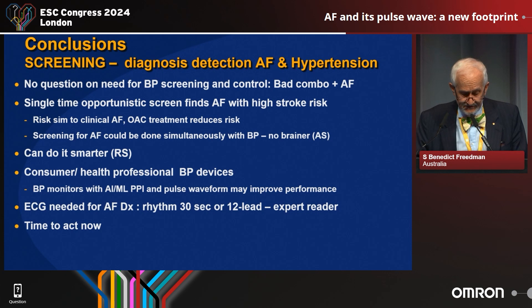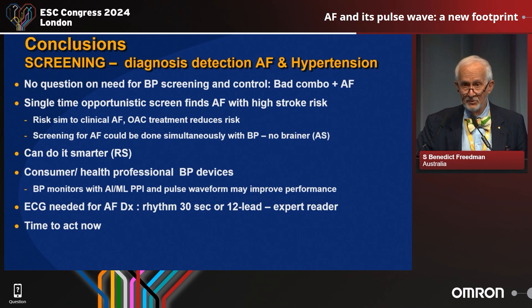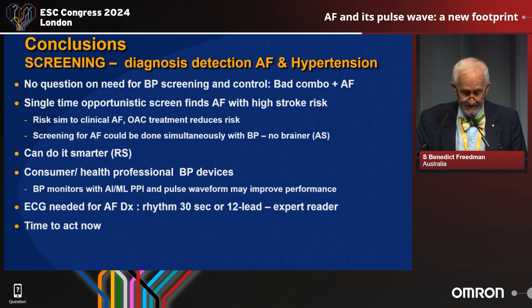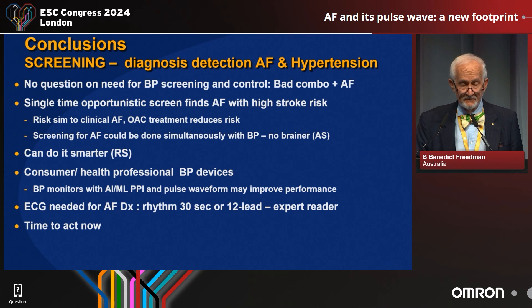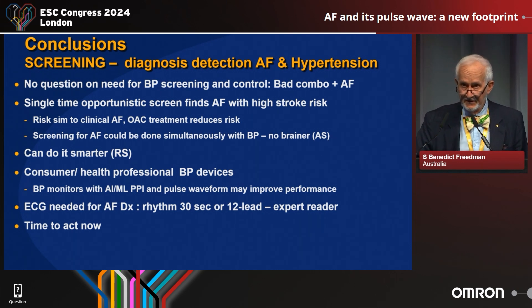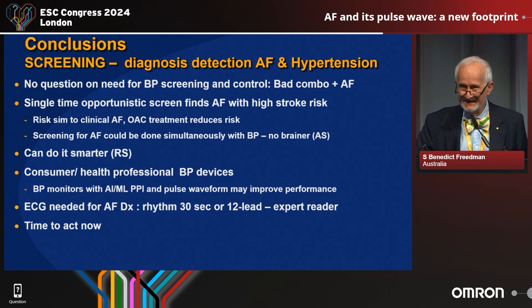We can use consumer and health professional blood pressure devices — BP monitors with AI inbuilt — using more clever ways of looking at the pulse waveform to make a more accurate diagnosis and improve performance. ECG will still be needed for the AF diagnosis, and that can be done with a 30-second handheld rhythm strip or a 12-lead ECG and someone who knows how to read ECGs. We've got the evidence. We know they're bad together. We know it's easy to do. Let's get ahead and do it. Time to act now. Thank you very much, ladies and gentlemen.